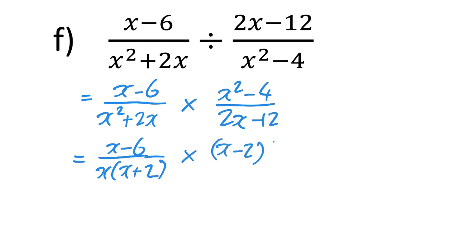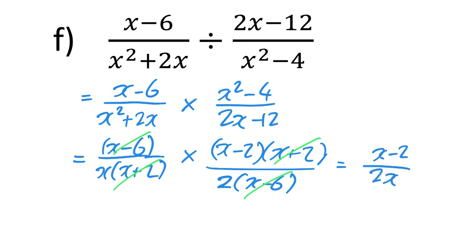And then I'm just factorizing here, so (X minus 6) over X(X plus 2), times (X minus 2)(X plus 2) over 2(X minus 6). And then what can you cancel: this (X minus 6) cancels with this (X minus 6), (X plus 2) cancels with this (X plus 2), leaving you just with (X minus 2) on the top line and 2X on the bottom line, and that's us done.